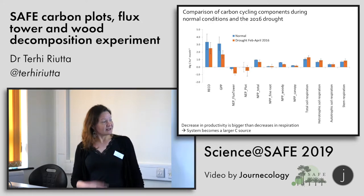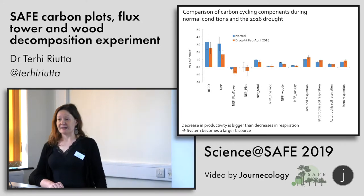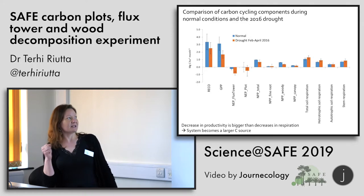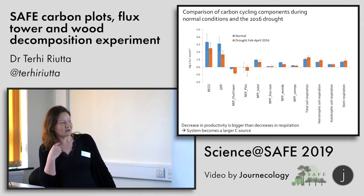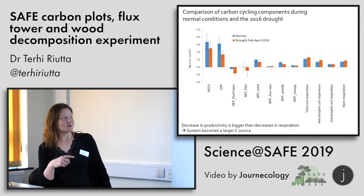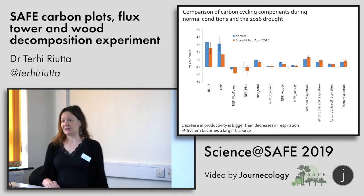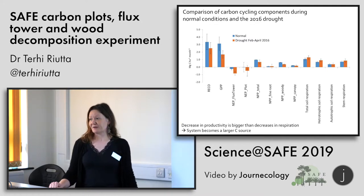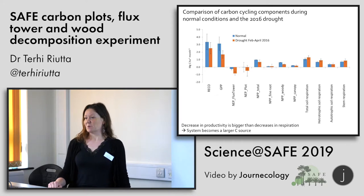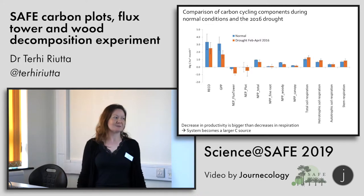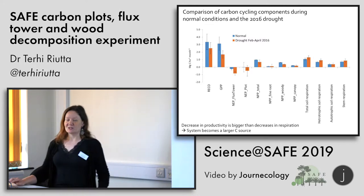These are all the other carbon cycling components measured during the El Niño drought and outside the drought. Averaging data from non-drought periods and comparing to the peak drought period, most process rates declined during the drought. But because the reduction was larger in productivity than in respiration, the system became a larger carbon source — before the drought it was neutral or a small source, and during the drought it became a considerably larger source.